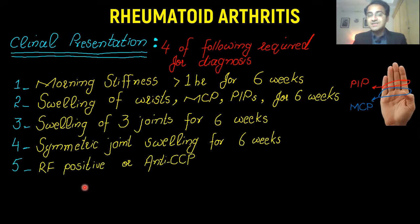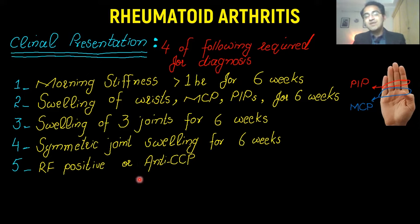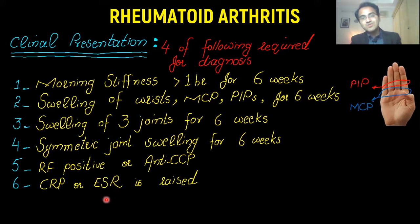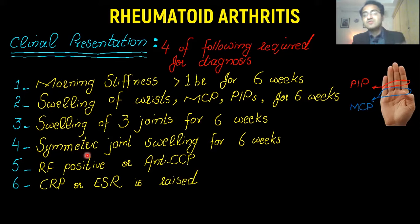Rheumatoid factor should be positive or anti-citrullinated peptide (anti-CCP) should be positive — at least one of these. C-reactive protein and ESR are also raised, since rheumatoid arthritis is an inflammatory condition and inflammatory markers will be elevated. You need four out of these six points for considering the diagnosis of rheumatoid arthritis.